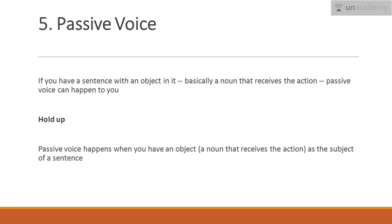Now, passive voice. Active voice and passive voice have haunted a lot of students in early classes. If you have a sentence with an object — basically a noun that receives the action — passive voice can happen. Re-read that last paragraph: there's way too much passive voice. See how it seems jumbled and not quite clear and punchy? Passive voice happens when you have an object, a noun that receives the action, as the subject of a sentence. It's a complicated thing to describe, but please try and practice it because incorrect usage of active and passive voice can be a really big turn-off.